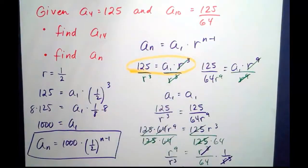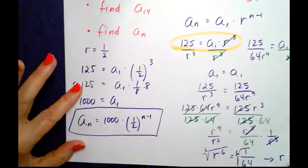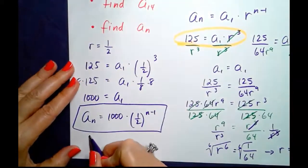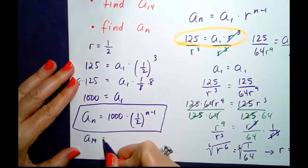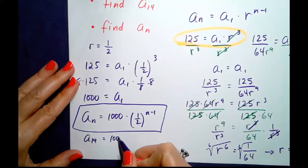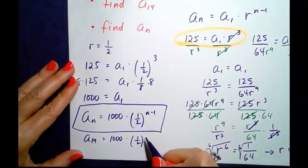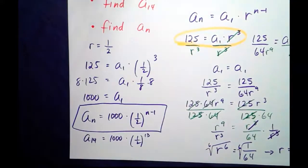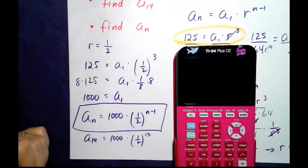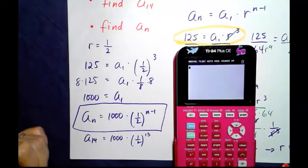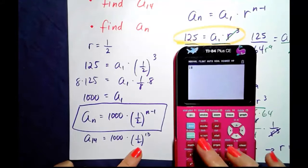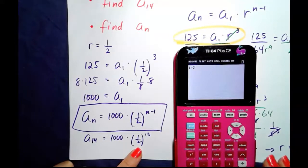Now that we know that, we can use that to find our first bullet point, which is a sub 14. A sub 14 equals 1000 times 1 half to the 14 minus 1. So let's go to the calculator. 0.5 raised to the 13th power.